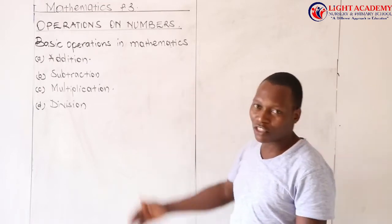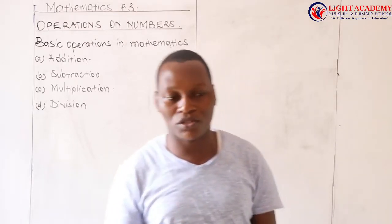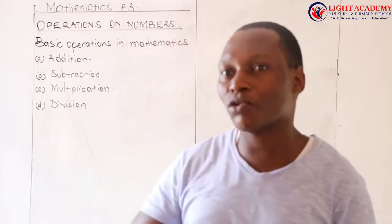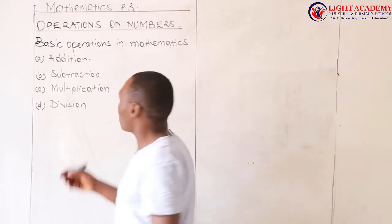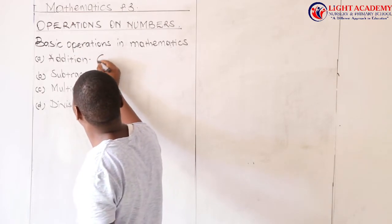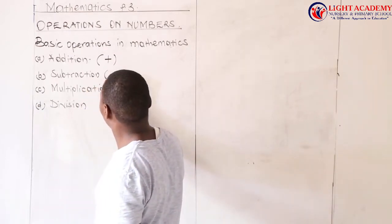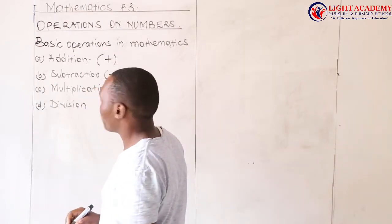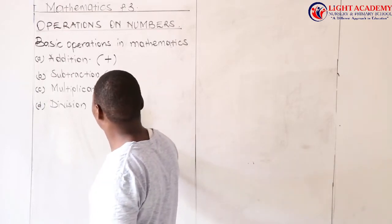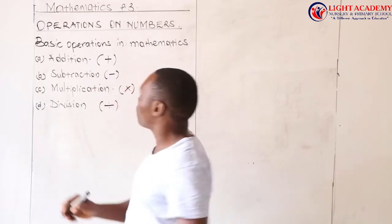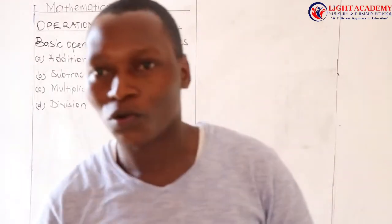These four operations are very important because one operation helps the other to work out. We must start from their symbols, because when you fail to understand their symbols and you meet them in questions, you might answer wrongly. For addition, the symbol is like a cross. Subtraction is written as a minus sign. Multiplication is written as its symbol. Division is written as its symbol. Those are the basic four operations we shall look at during the study of this topic.